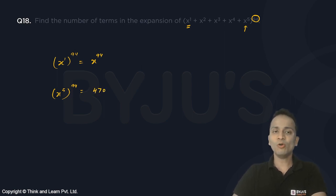Now there will be one term for every power of x starting from 94 up till 470. Starting from 94 up till 470, every power of x will be present in the expansion of this term.